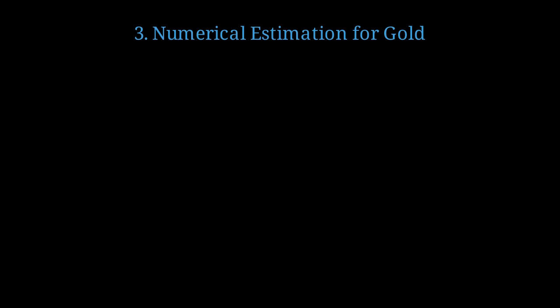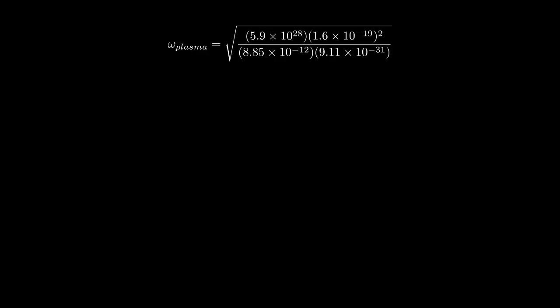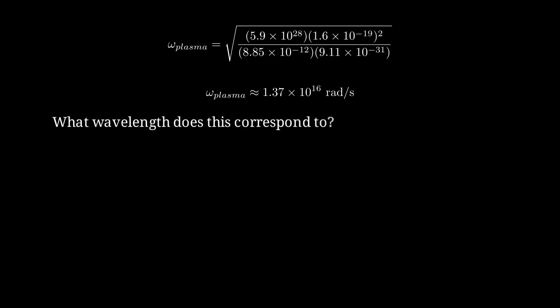Let's calculate the actual plasma frequency for gold nanoparticles. For gold, the electron density is approximately 5.9 times 10 to the 28 electrons per cubic meter. Plugging in all our values, we get omega plasma equals the square root of this expression, giving us approximately 1.37 times 10 to the 16 radians per second. Using lambda equals 2 pi c over omega plasma, we get approximately 138 nanometers. This is in the ultraviolet range, which is why bulk gold appears gold or yellow.